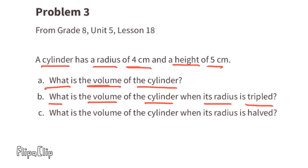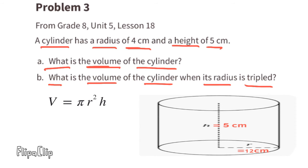Part b: What is the volume of the cylinder when its radius is tripled? Well, originally the radius was 4 centimeters. If we triple 4, we get 12. So now we can substitute the r with a 12. The volume equals π times 12² times the height. Since the height is 5, we can substitute the h with a 5. 12 squared equals 144, so the volume equals π times 144 times 5. 144 times 5 is 720, so the volume would be 720π cm³.